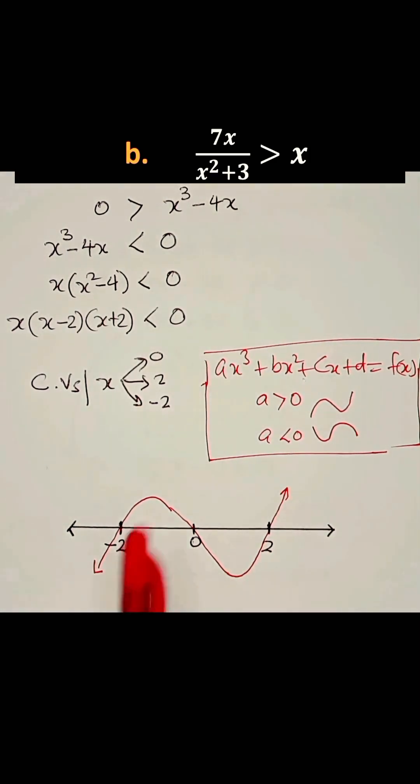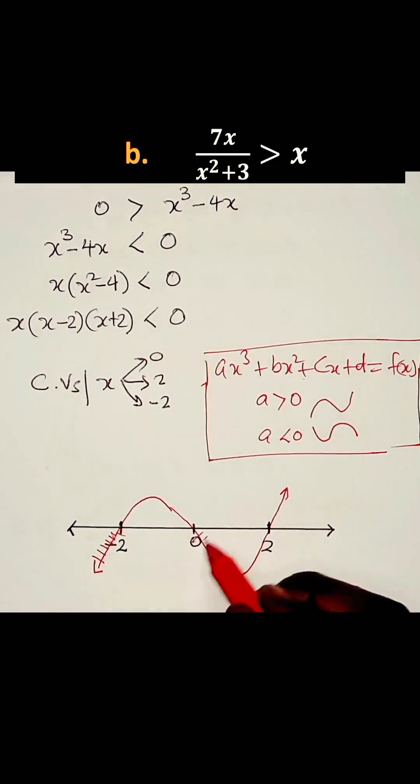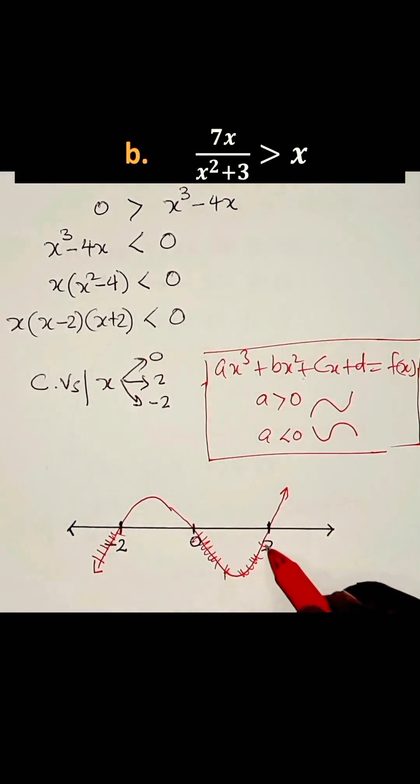Now we are looking for parts of the graph that are less than 0, and these parts are in this region and that region.